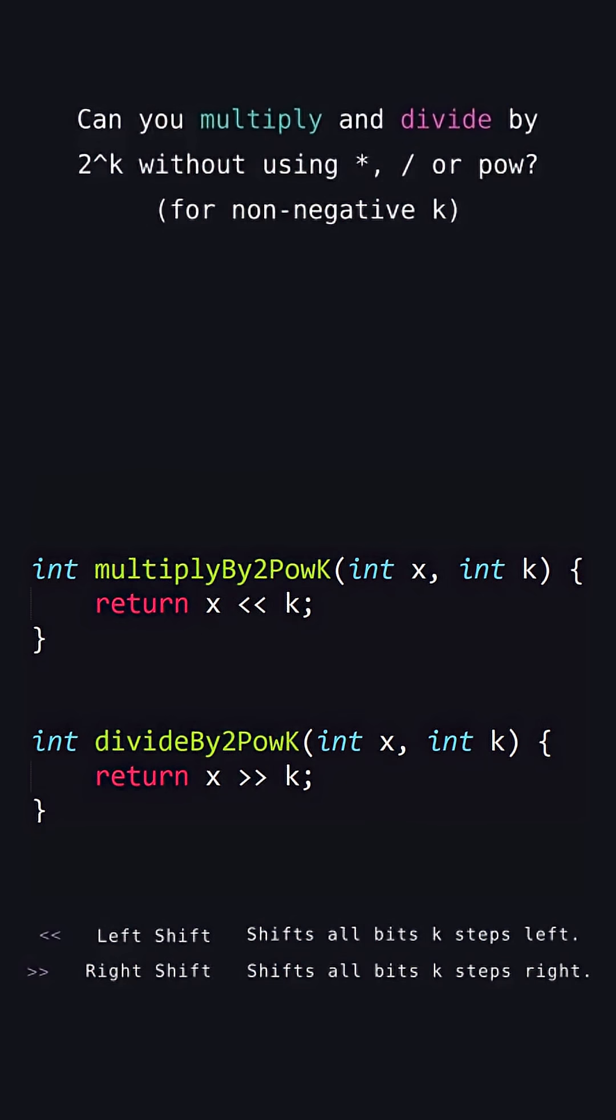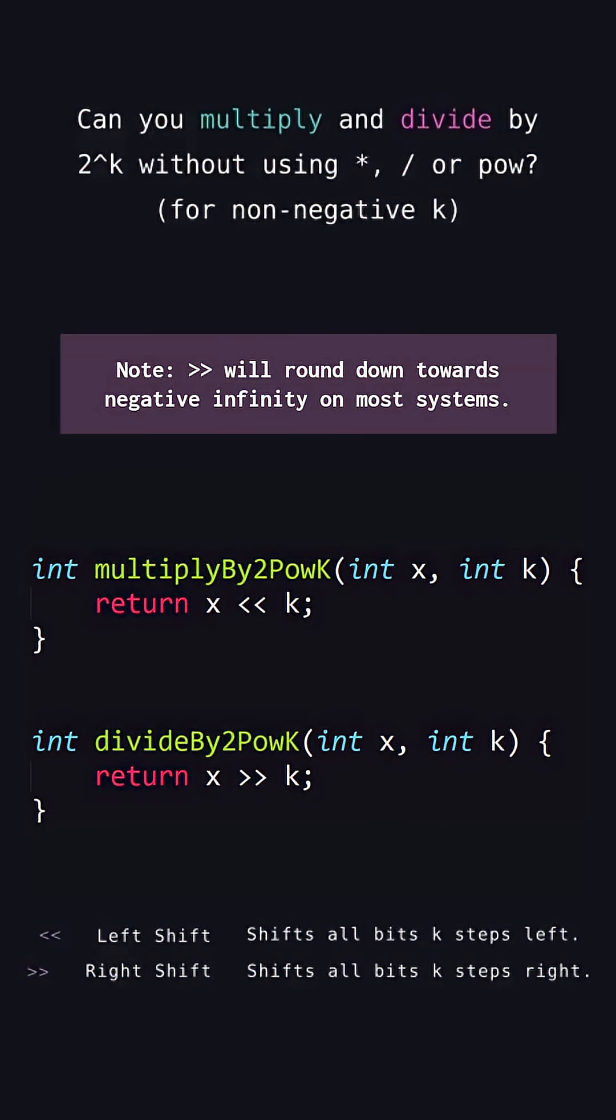In conclusion, you can multiply by 2 to the k by shifting the bits k spots to the left with the left shift operator. Then you can divide by shifting the bits back k spots to the right with the right shift operator.